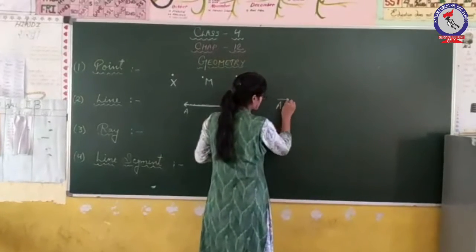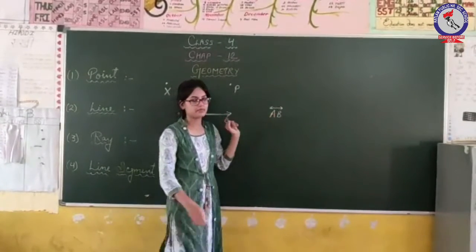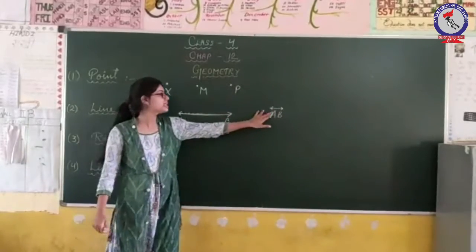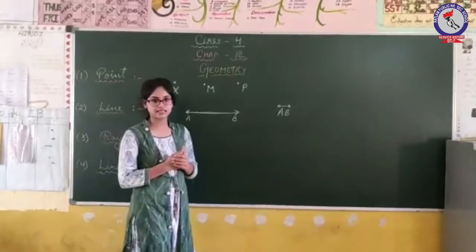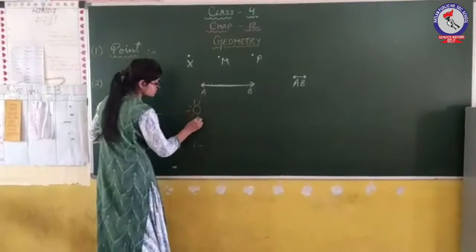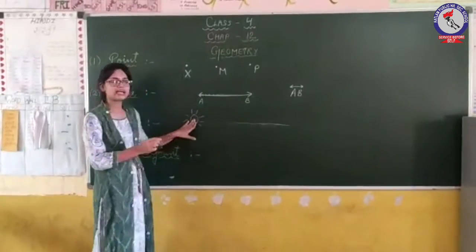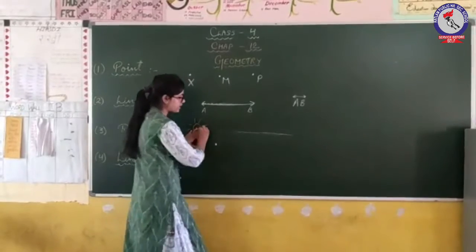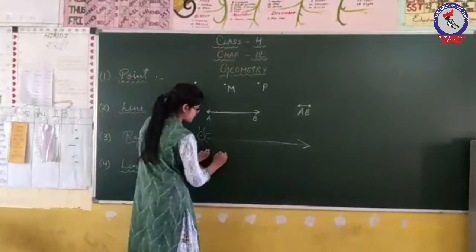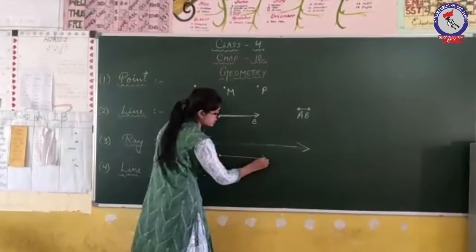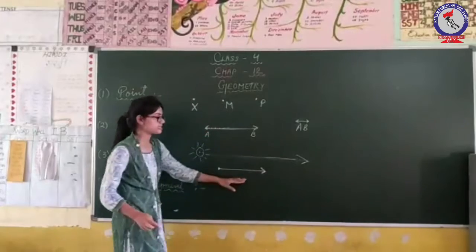This is line AB. From this point to this point. This is the endpoint where it starts. Then this will be the endpoint. In ray, it comes in one direction from one side, and the endpoint is the end.